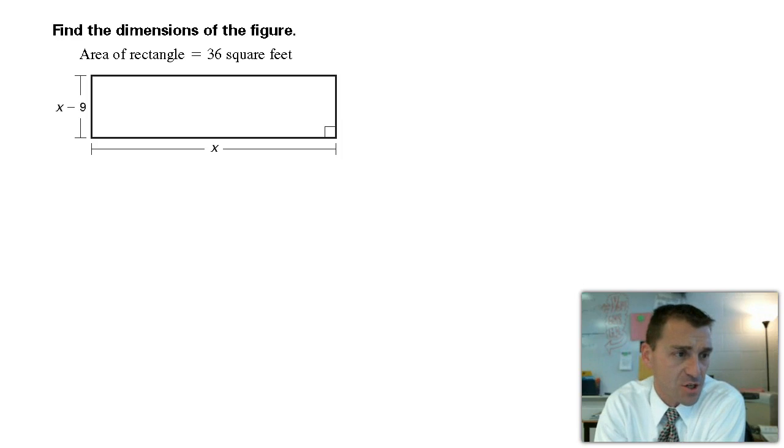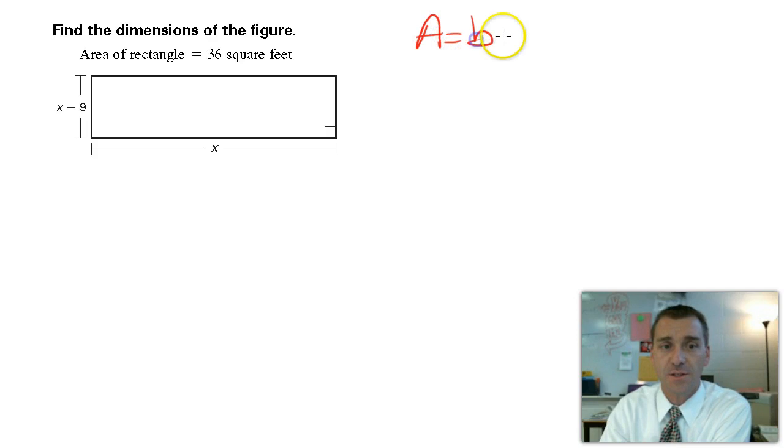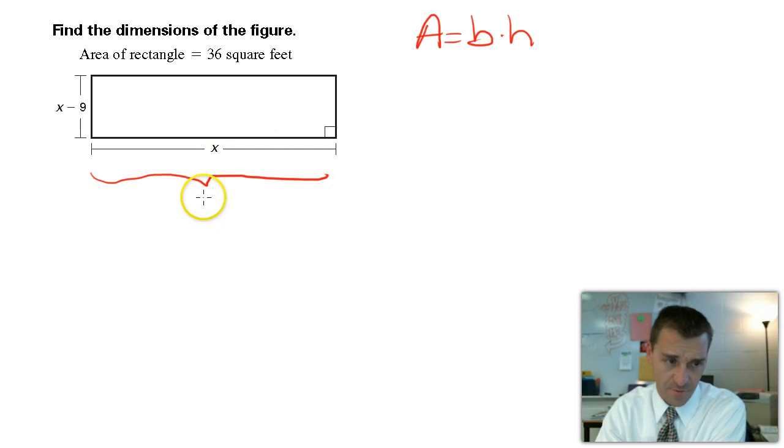So you see in this question here, we got find the dimensions of the figure. It's a rectangle. Area of the rectangle is 36 square feet. Immediately, here's what I see. I see it tells me area of a rectangle, and I remember from elementary school, area of a rectangle is just nothing more than base times the height. Base is this thing down here. And you might know it as length times width, whatever. So this is the base. We'll call this the height. Beautiful.